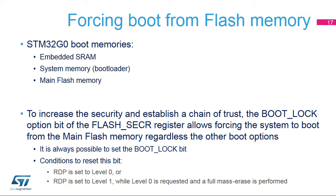In the STM32G0, three different boot modes can be selected: boot from embedded SRAM, boot from system memory, and boot from main flash memory. Executing a secure boot from securable memory implies that the boot area is the flash memory. To disable the other boot areas, the boot lock option bit has to be set in the flash SEC_R register. This option bit can be set unconditionally; however, resetting it is possible only when the RDP level is 0, or when RDP is changed from Level 1 to Level 0, which causes a full mass erase.